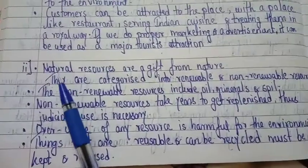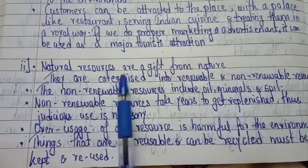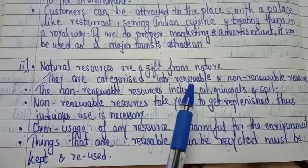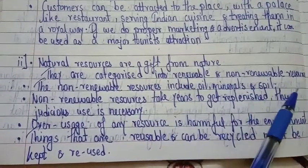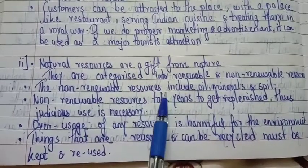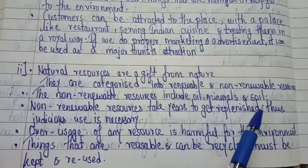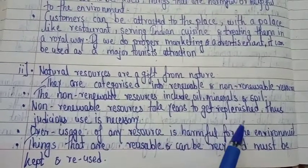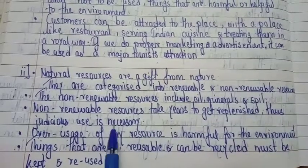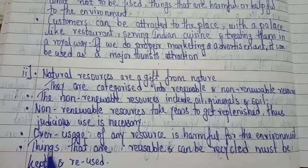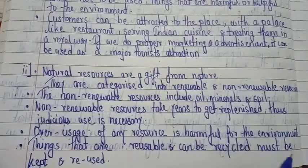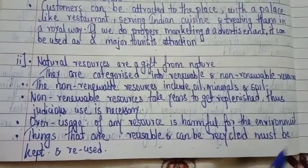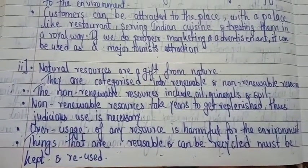Second topic: 'Prudent utilization of natural resources.' Points: Natural resources are a gift from nature. They are characterized into renewable and non-renewable resources. Non-renewable resources include oil, minerals, and soil. Non-renewable resources take years to get replenished, thus judicious use is necessary. Overuse of any resource is harmful for the environment. Things that are reusable and can be recycled must be kept and reused.